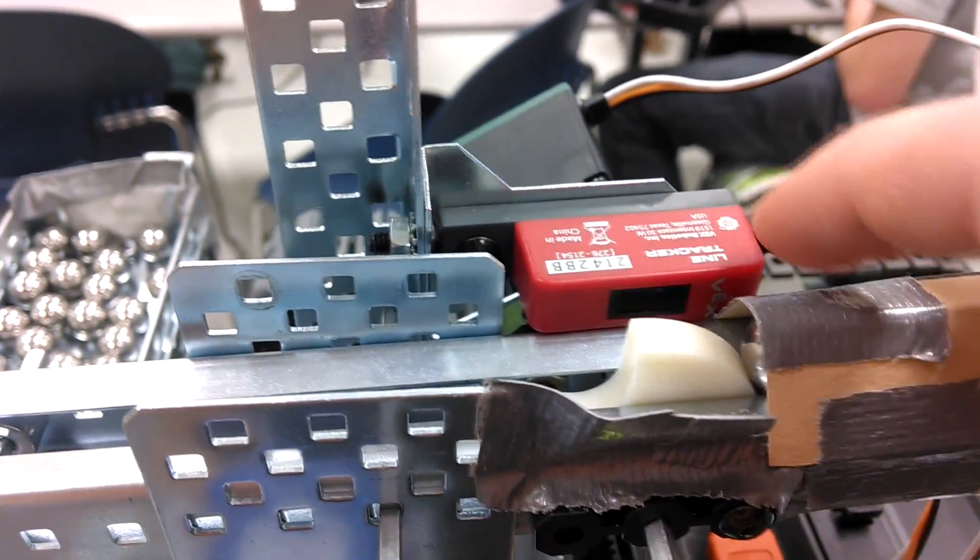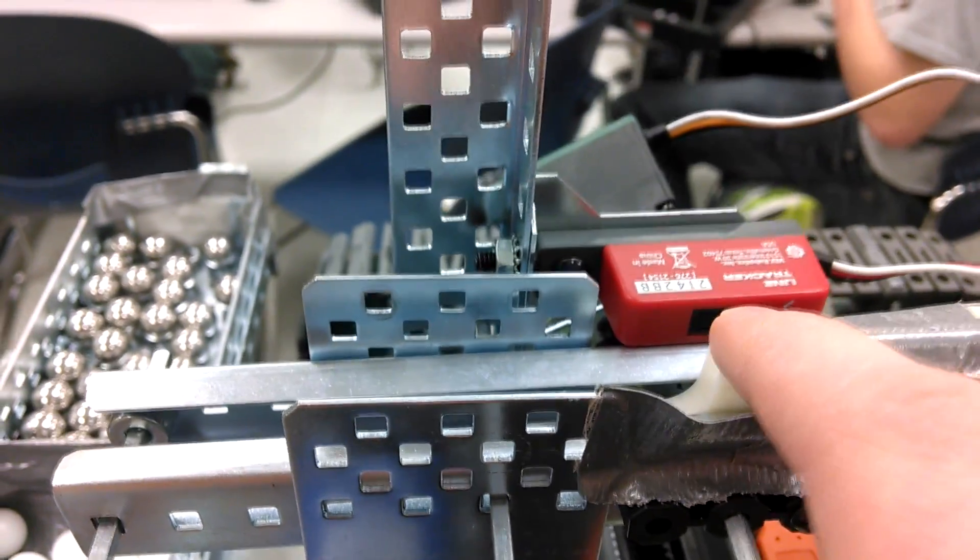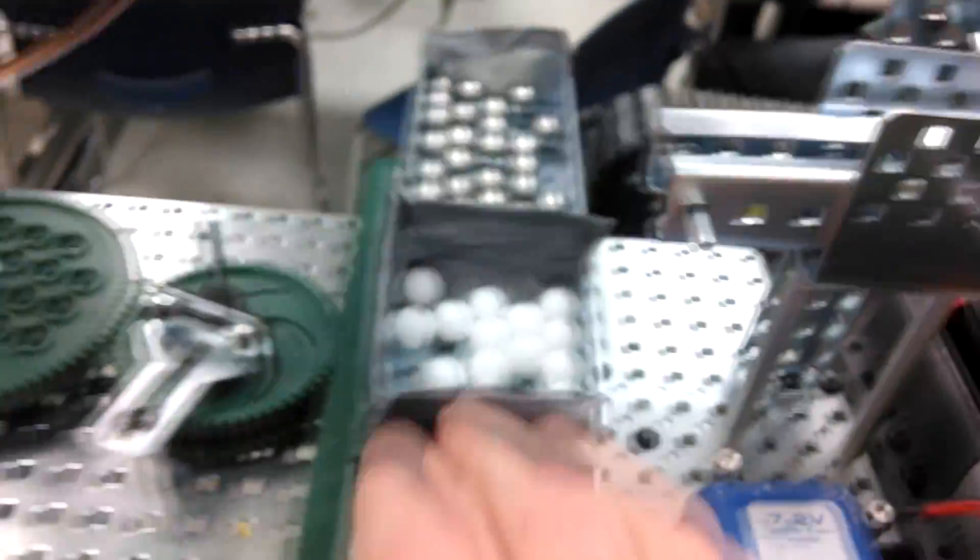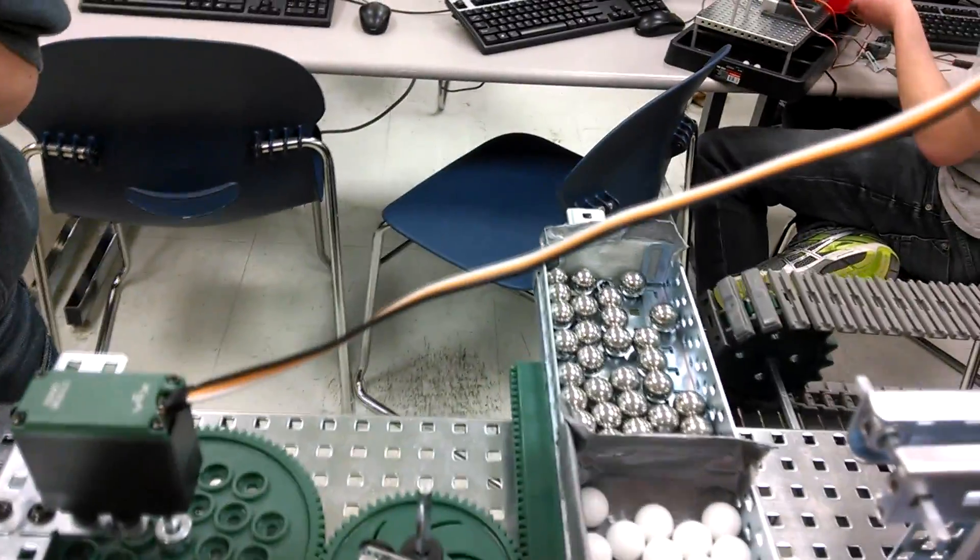This is our line tracker, it sorts them optically, and then it sorts the balls here, and then it tells this to move to the corresponding position, and then it releases the ball, it falls down.